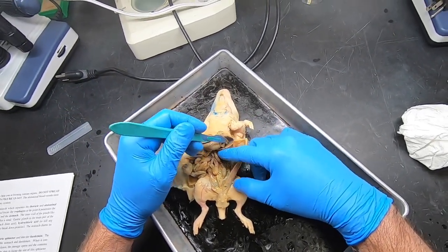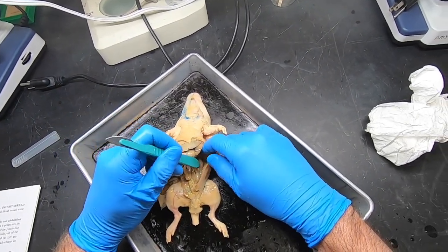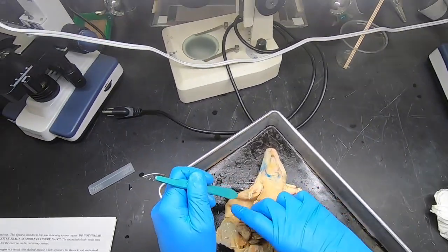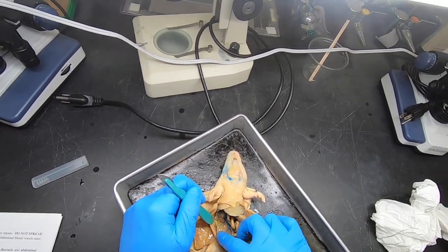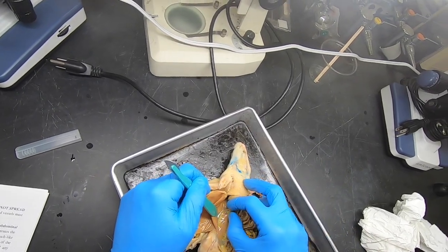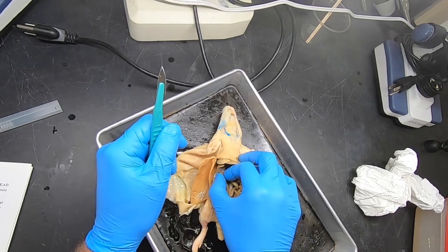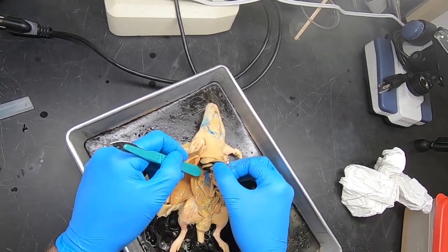And underneath there, we can find at the back towards the dorsum the kidneys—the left kidney and the other one, the right kidney, which is trapped there under some mesentery.